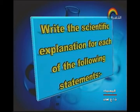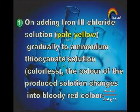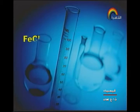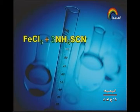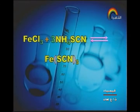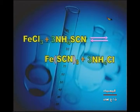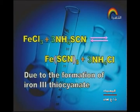Next type of question: write the scientific explanation for each statement. When adding iron(III) chloride solution (yellow) gradually to ammonium thiocyanate solution (colorless), the color changes to blood red. The reason: FeCl₃ reacts with 3NH₄SCN giving iron(III) thiocyanate Fe(SCN)₃ and ammonium chloride 3NH₄Cl. The formation of iron(III) thiocyanate, which has a blood red color, produces this color change.